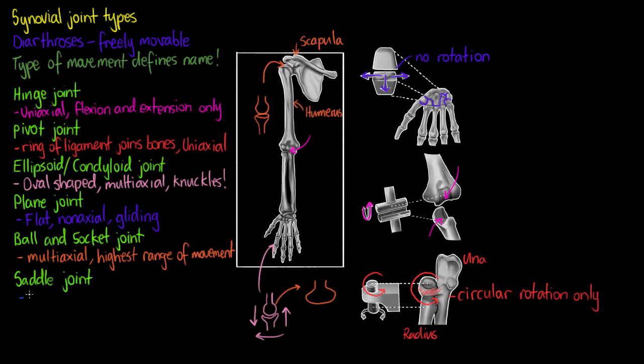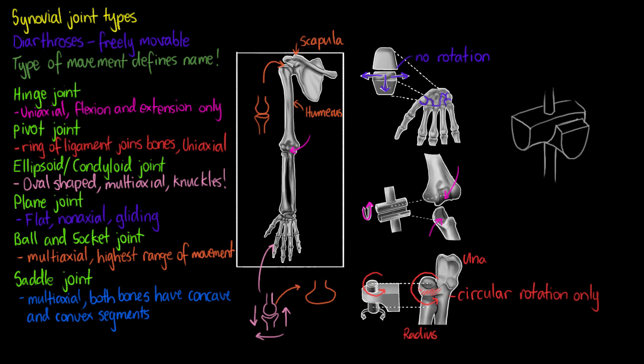Our last example of a synovial joint is the saddle joint. These joints are similar to condyloid joints, but allow slightly more movement. Each bone in the saddle joint will have both a concave and convex area within it. The best example of these are found within your thumbs. So I'll just draw up quickly a picture of a saddle joint, because I don't have one here, and just showing you the axes it can move in.